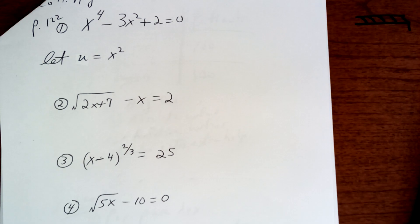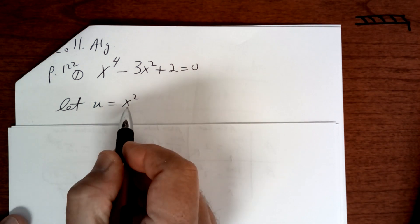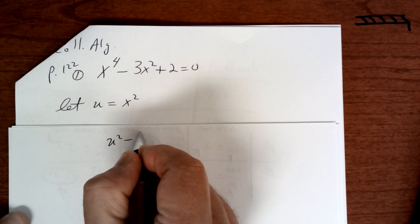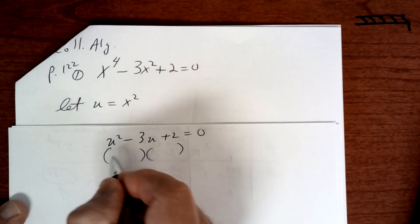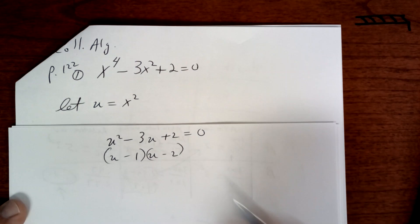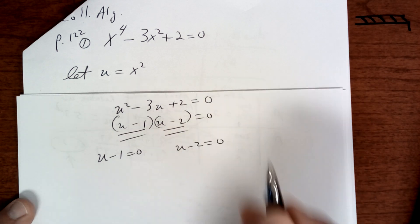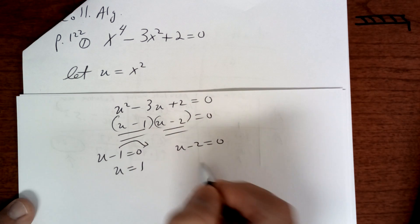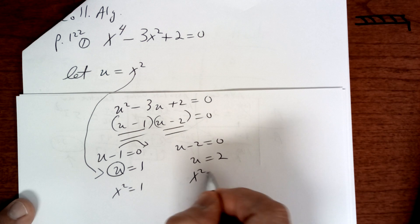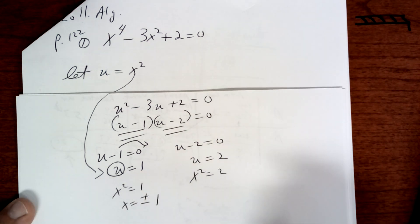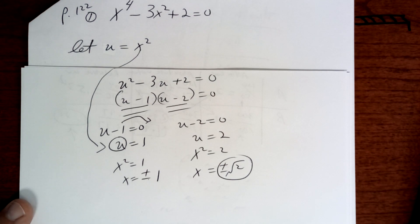Today we're going to talk about these, so copy down that problem. What we're going to do is substitute u equals x squared. So we're going to have u squared minus 3u plus 2 equals 0. Then we're going to factor this — it's going to be (u−1) and (u−2), both set equal to 0. Those are called factors. So u minus 1 equals 0 and u minus 2 equals 0, giving u equals 1 and u equals 2. Then you substitute back in what u equals, which is x squared. So x squared equals 1 and x squared equals 2, giving x equals plus or minus 1, and x equals plus or minus the square root of 2, which is about 1.4. And that's how you do that one.